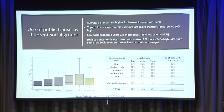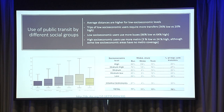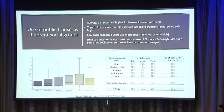Some of the main conclusions from this study: average trip distances are higher for low socioeconomic levels; trips from low socioeconomic levels require more transfers than trips from higher economic levels; and most trips from lower socioeconomic levels are made by bus. This work is published on the Inter-American Development Bank website.